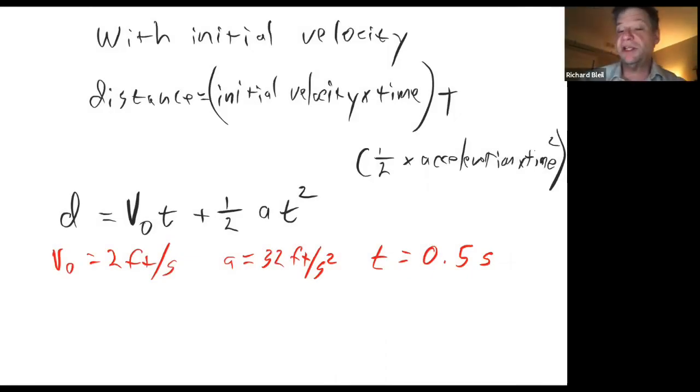So suppose that we have some initial velocity, and we always denote initial velocity with a subscript zero, and an acceleration.